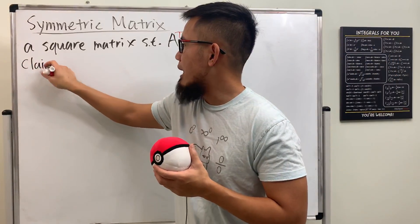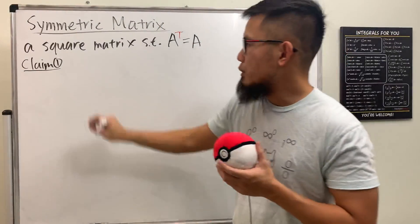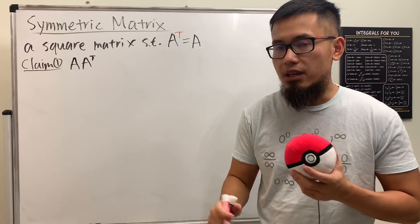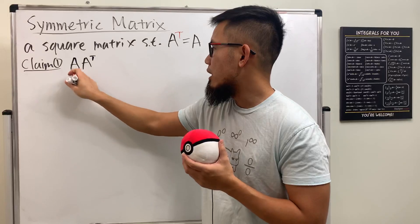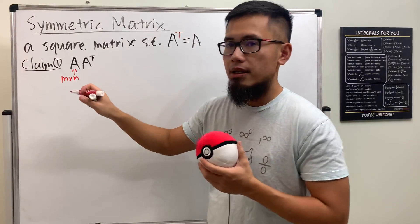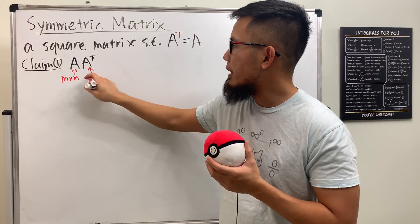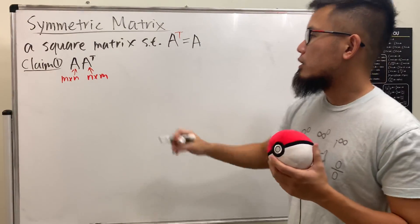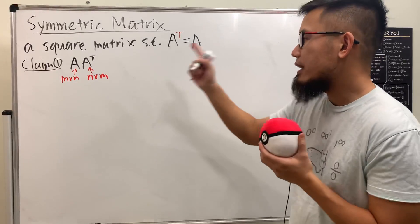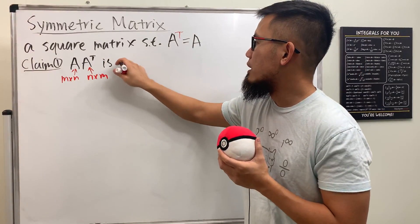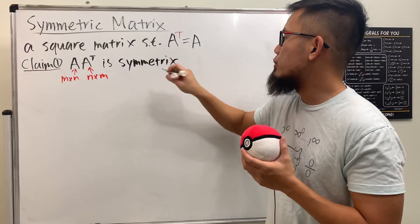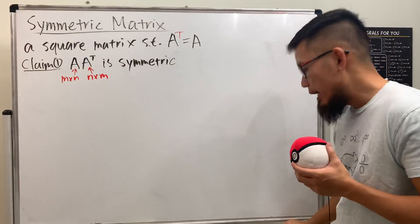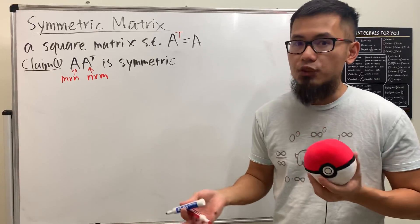Here is my first claim: if you look at A times A transpose, the dimension of A can be anything — I'll write it as m by n. If you do the transpose, A becomes n by m, and when you multiply them the result is m by m. So this has a chance of being square, and in fact A times A transpose is always going to be symmetric for any matrix A.